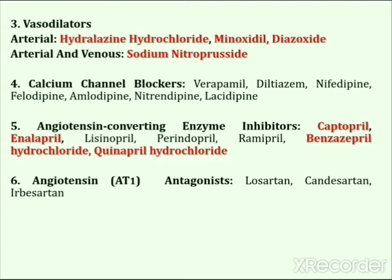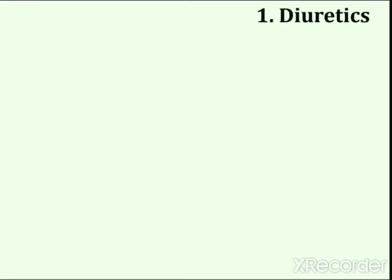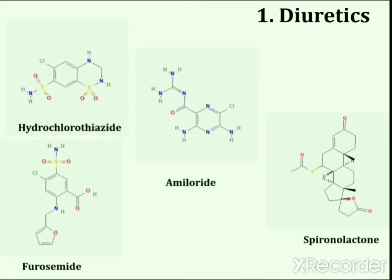In this classification, red-marked drugs are included in the essential medicines list. The first main category is diuretics, which have long been used for the treatment of hypertension. Drugs in this category include hydrochlorothiazide, furosemide, amiloride, and spironolactone.